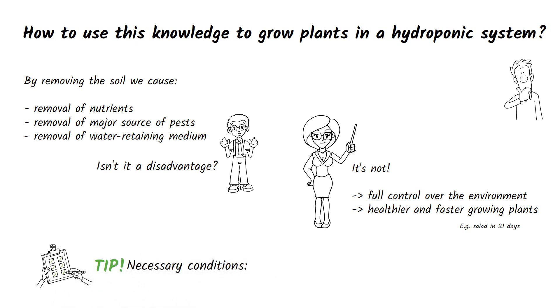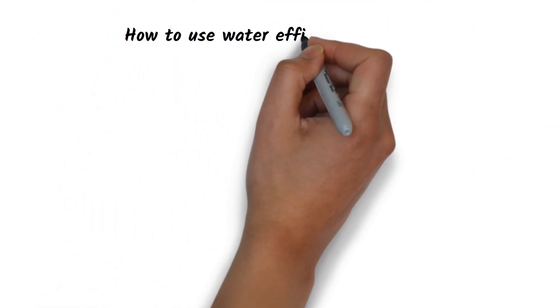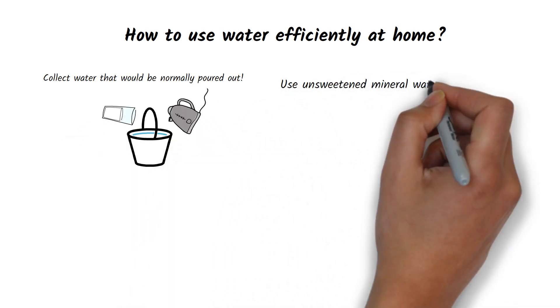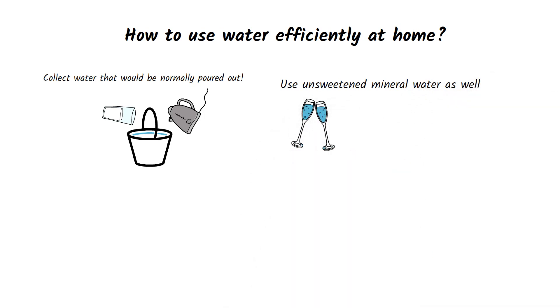If the plant does not thrive, check if it has got enough light, irrigation and nutrients. Let's take a look at how to effectively manage these resources when growing plants hydroponically at home. How to use water efficiently at home? Collect water that would otherwise be normally disposed of. For example, water left over after a visitor or unused water from the kettle. You can also use unsweetened mineral water. It doesn't harm plants and can give them the minerals they need.